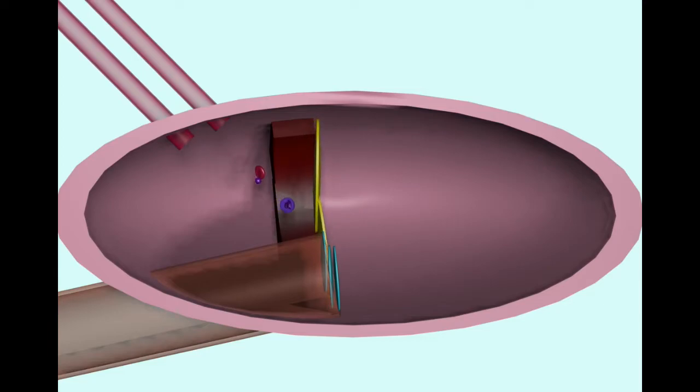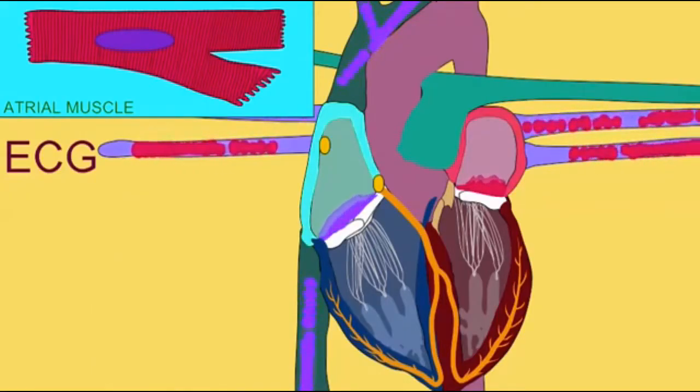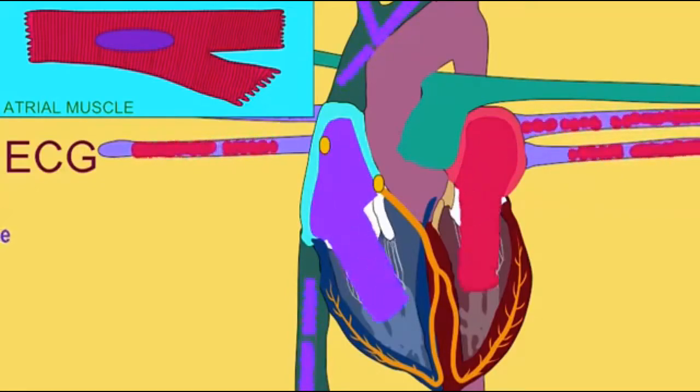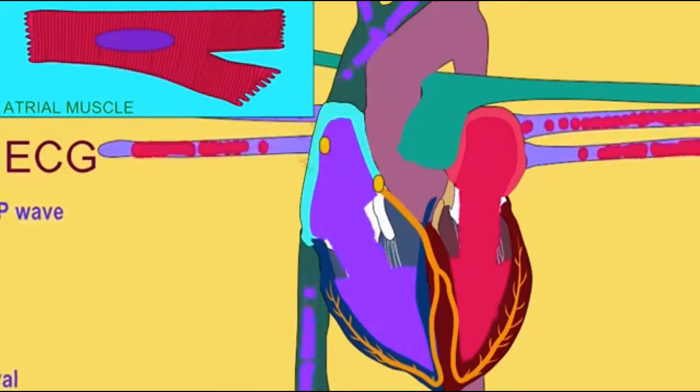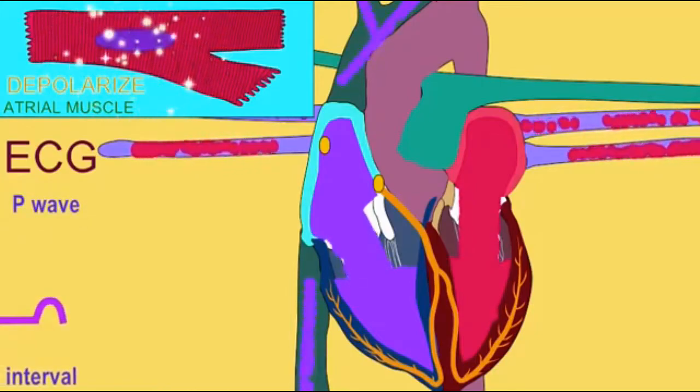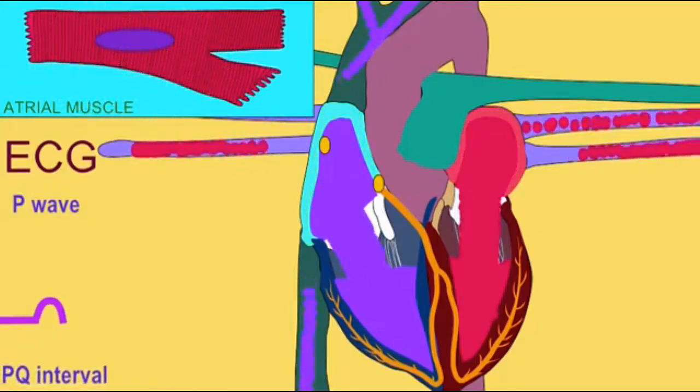So once again, we're going to have to wait inside the left atrium because the left AV valve, the bicuspid valve, is currently closed. It won't be until after the T wave of the previous cycle that the bicuspid valve opens so that the high pressure of blood in the atria can then push us into the left ventricle.